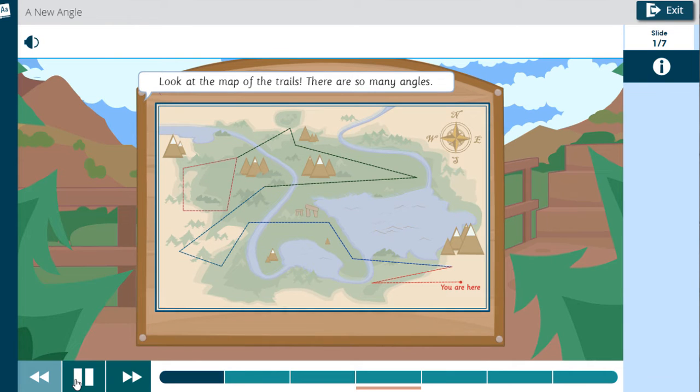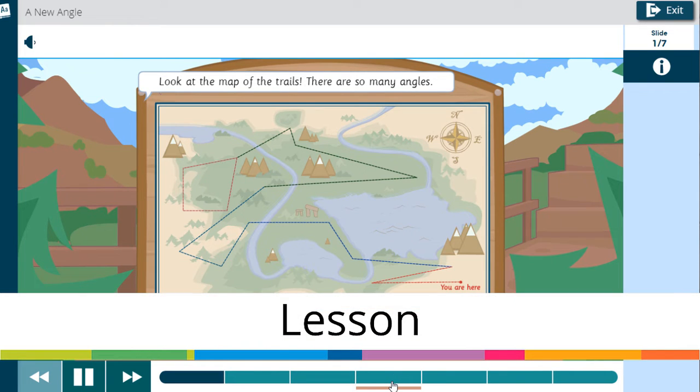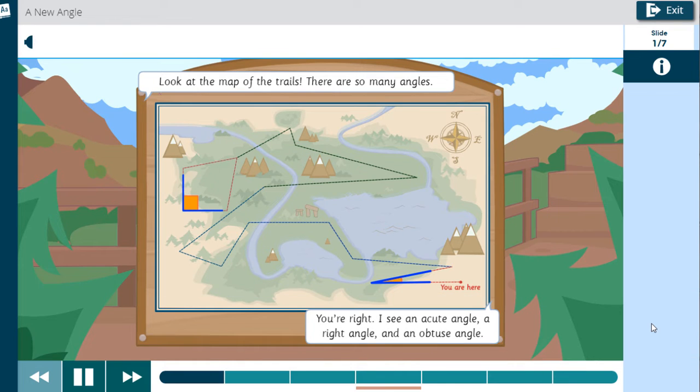Look at the map of the trails. There are so many angles. You're right. I see an acute angle, a right angle, and an obtuse angle.